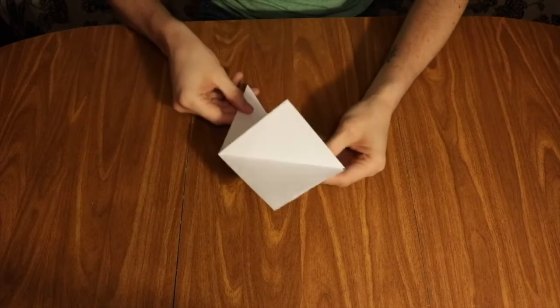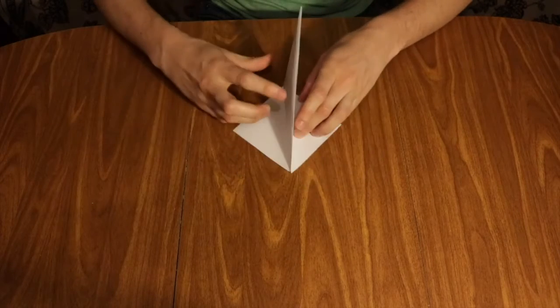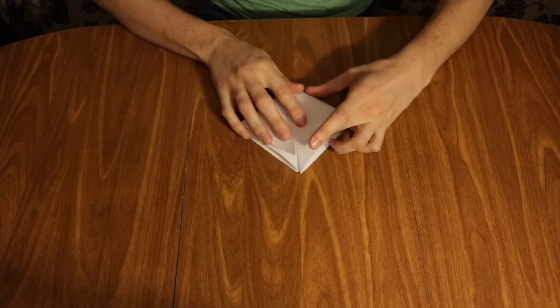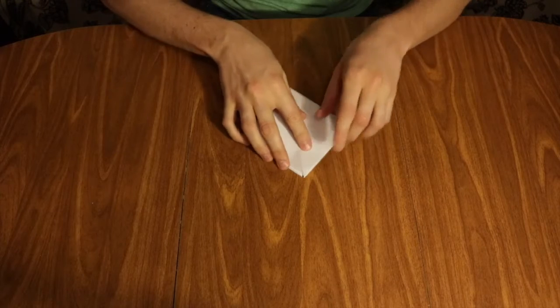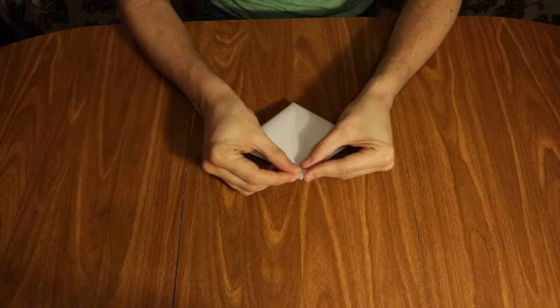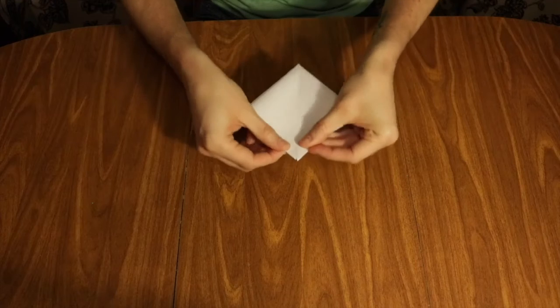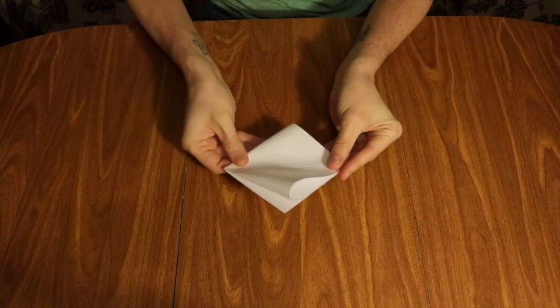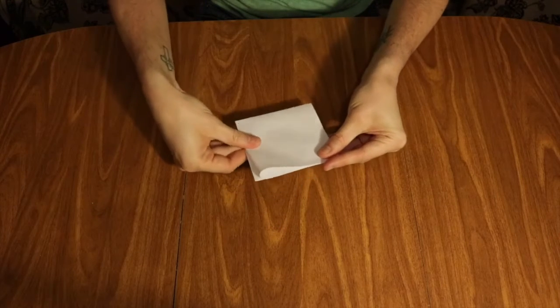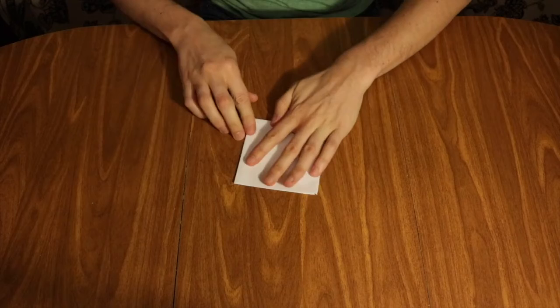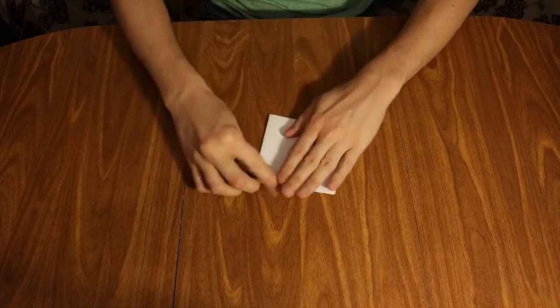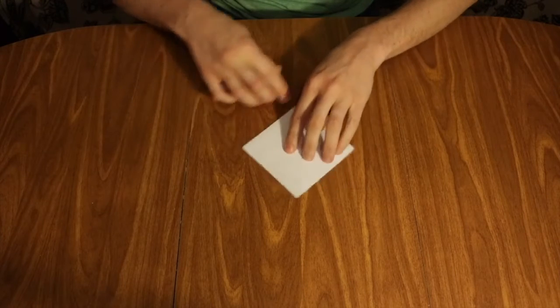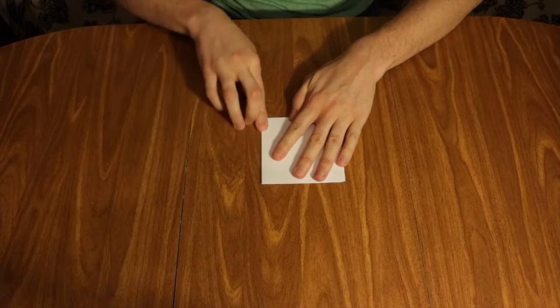We're going to do the same thing on the other side. Open up that triangle, fold the tip of the triangle down so it is now flush with the base. You should have what was once a triangle is now a square. Make sure you crease those folds so they will stick.